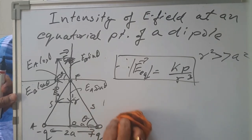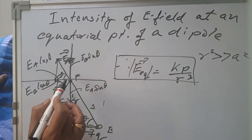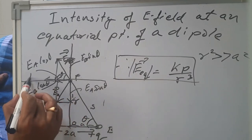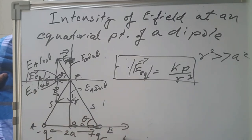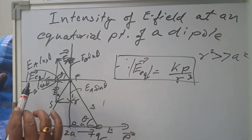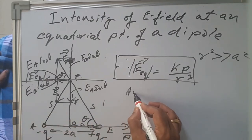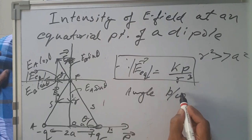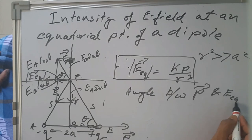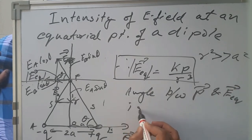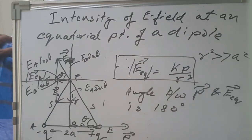Now, what is the angle between the resultant E equatorial and the dipole moment P? The resultant E equatorial points in this direction. Dipole moment P is directed from negative to positive. The angle between vector P and vector E equatorial is 180 degrees. For the axial line, it was zero degrees, whereas for the equatorial line it is 180 degrees.